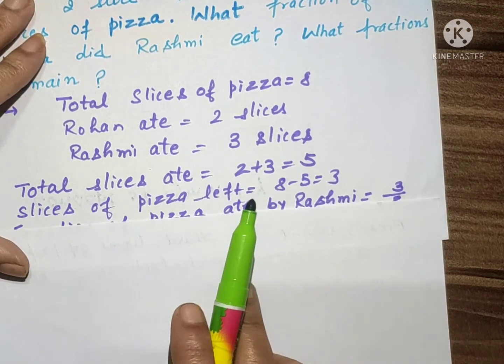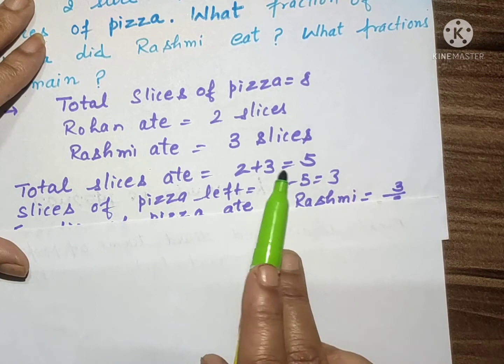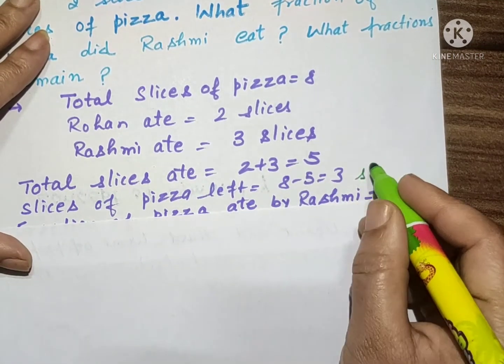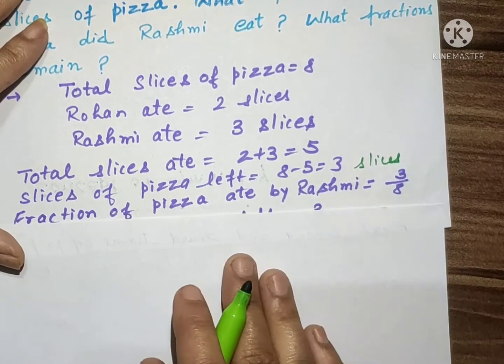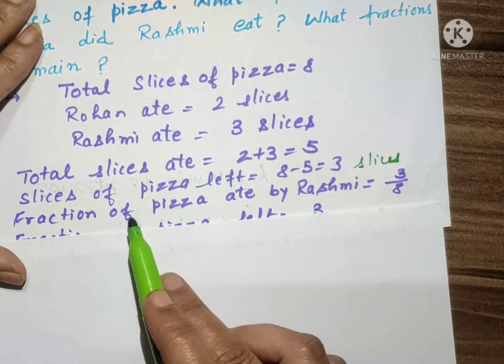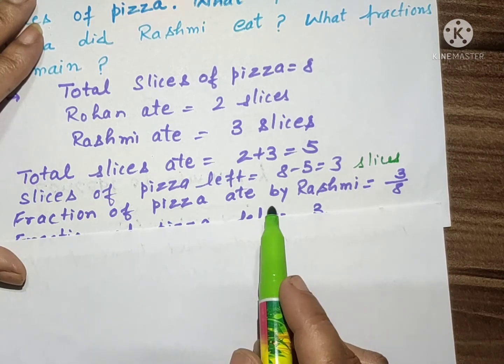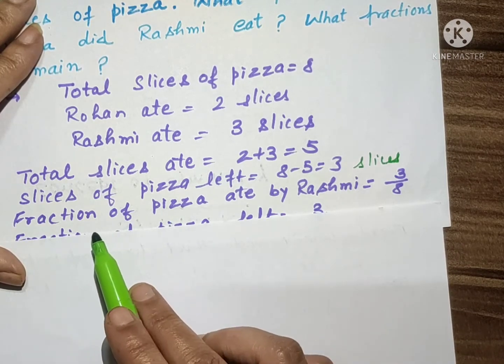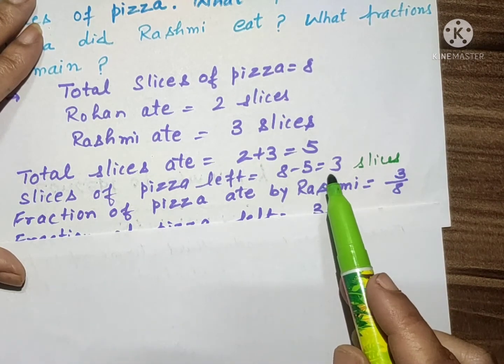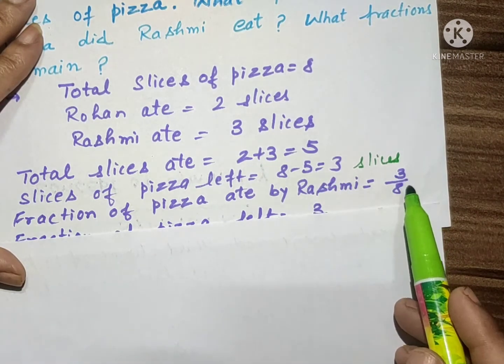So slices of pizza left - bacha kitna? Eight mein se five khaai, eight minus five is equal to three slices. Toh fraction of pizza ate by Rashmi - Rashmi ne kitna khaya hai divide by total: three upon eight.